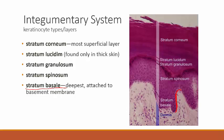Stratum spinosum is the next layer up, with a relatively large number of cell layers. Stratum granulosum is next. Stratum lucidum is found in thick skin only — it's not the stratum lucidum that gives thick skin its very thick epidermal layer, but rather the stratum corneum. And stratum corneum is the most superficial layer.